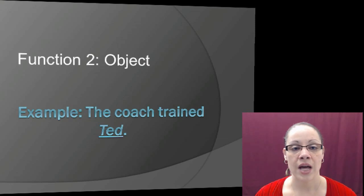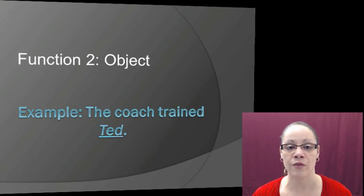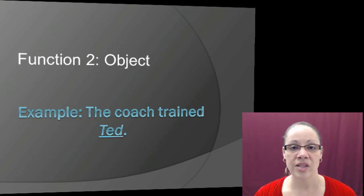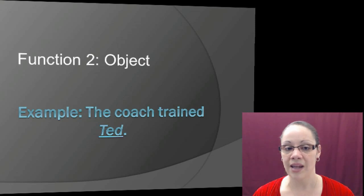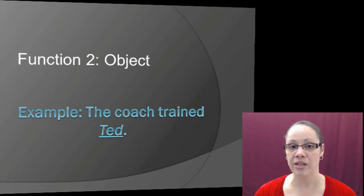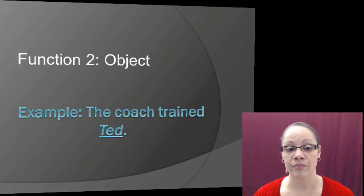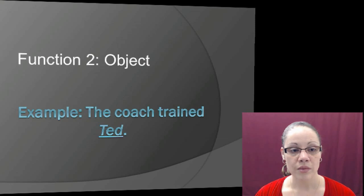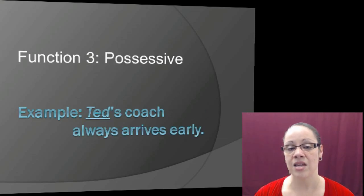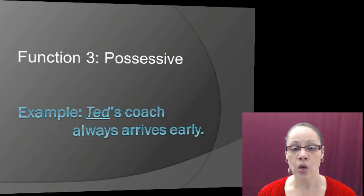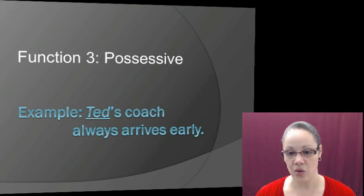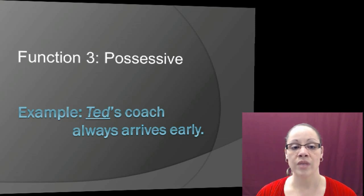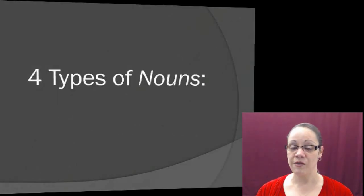The second function of a noun is serving as the object. In 'The coach trained Ted,' we ask: who did the coach train? Ted — so Ted is the object of the sentence. The third function is the possessive: 'Ted's coach always arrives early.' Whose coach? Ted's — showing ownership. So Ted is a noun showing possession of the coach.